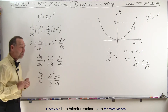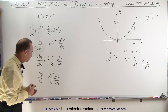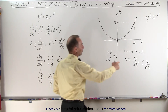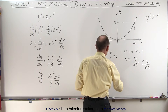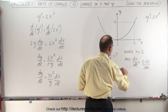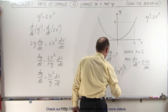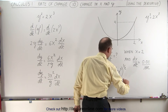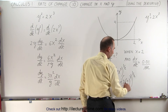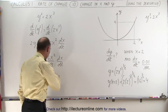Now we're ready to evaluate this. We want to find dy/dt when x is equal to 2 and dx/dt is equal to 0.01. But we still have a y here, so we need to calculate what y is when x equals 2. We take y equals the square root of 2x cubed, plug in x equals 2: y equals the square root of 2 times 2 cubed. 2 cubed is 8, times 2 is 16, so that's the square root of 16, which is 4 — which we noted on the graph already.